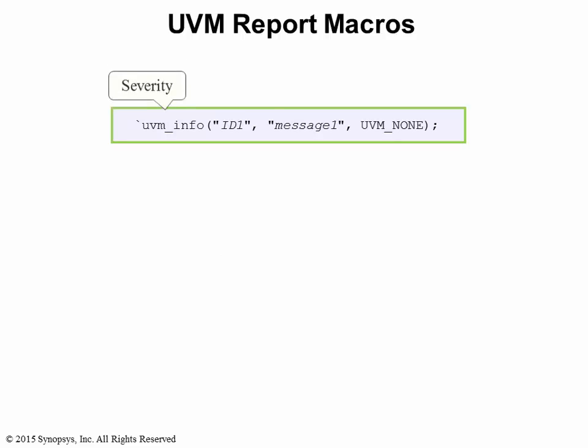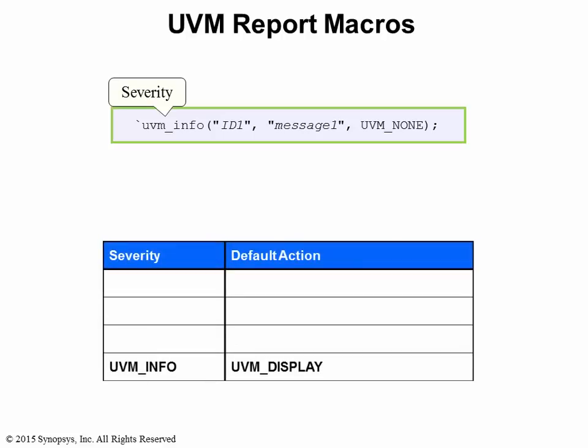The first part of the UVM report macro is the severity of the message. Each predefined severity in UVM has a default action associated with it. For the UVM_INFO severity, the default action is UVM_DISPLAY, meaning that the message will be displayed without any other simulation consequences. Within the macro, the first argument is the ID field, which will be used for filtering of messages.